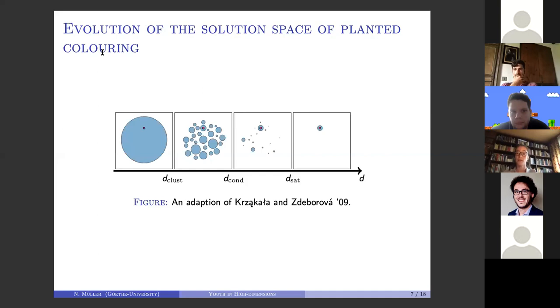In the analysis of this problem, it has turned out to be very useful to have some idea of how this planted coloring sits in the total number of solutions or colorings of your given graph. This is an adaptation of a picture in an article by Decelle and Zdeborová.